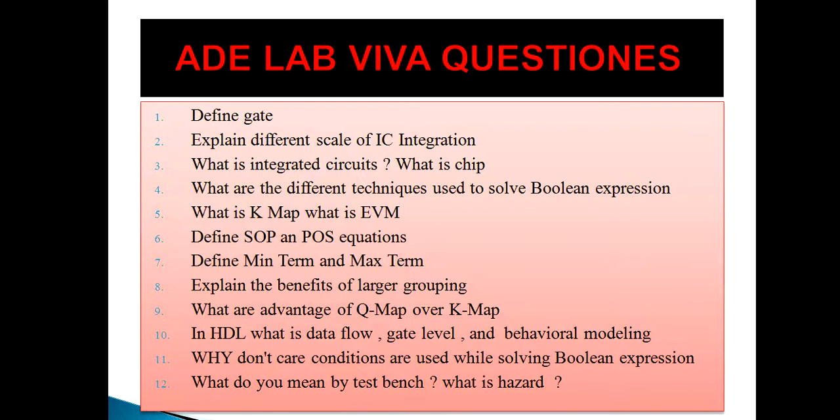Define SOP and POS. SOP is nothing but sum of product and POS is nothing but product of sum. Minterms are the terms which represent one in the truth table — also called sum of product. Maxterms are the terms in the truth table which represent zero — also called POS. POS is the logical product of those fundamental sums that produce output one in the truth table.